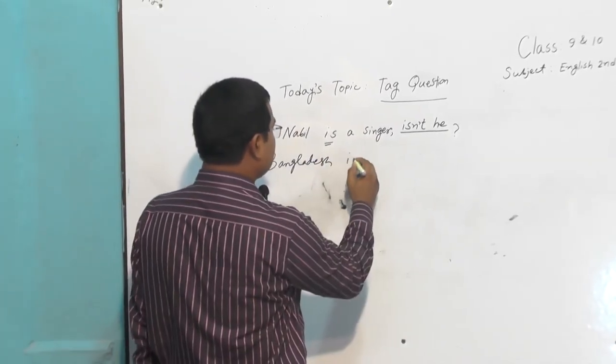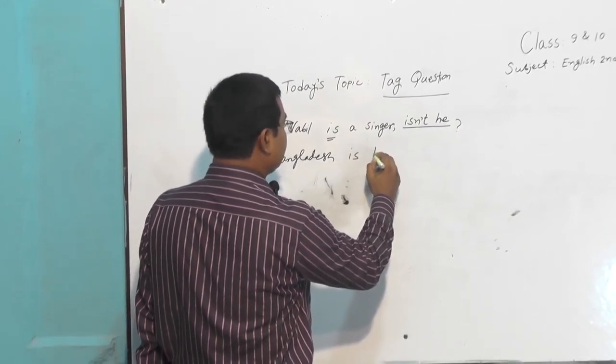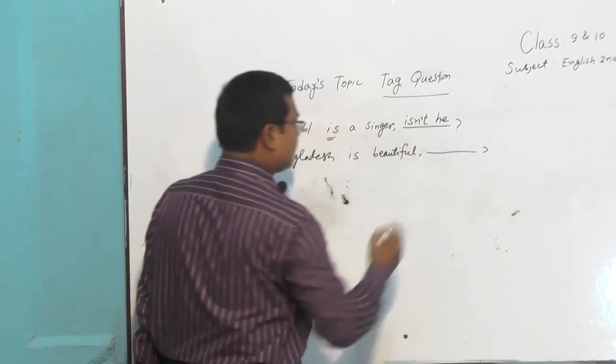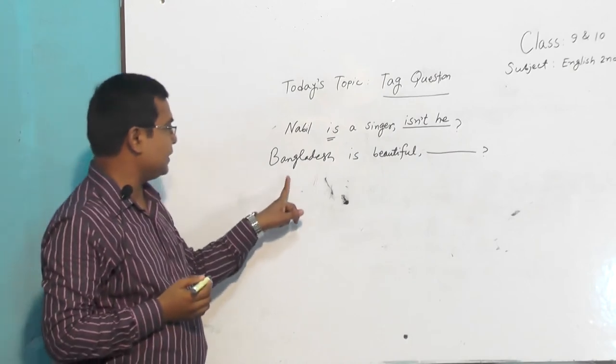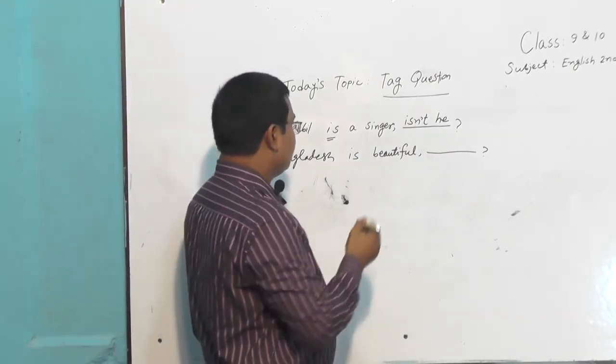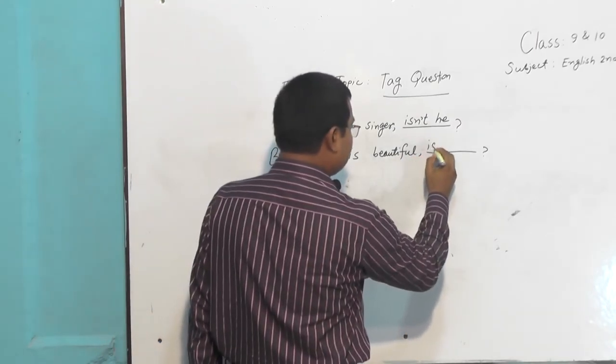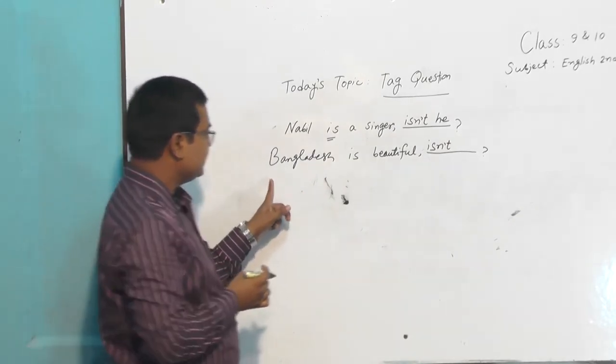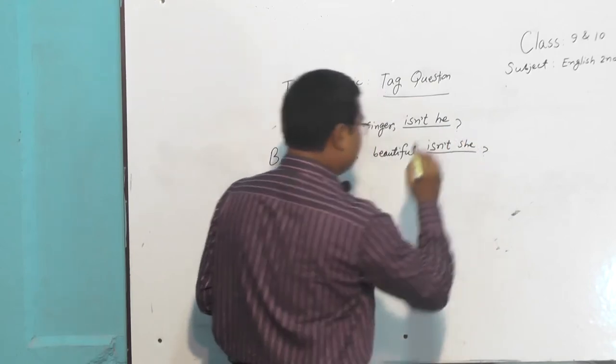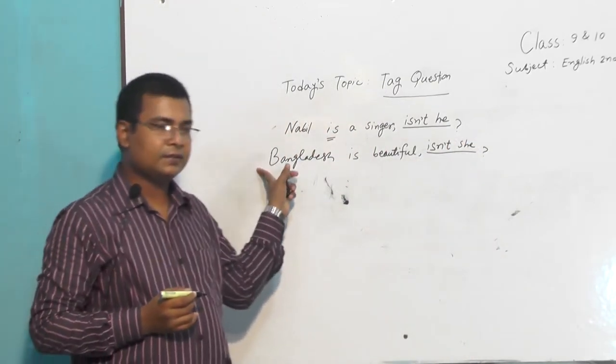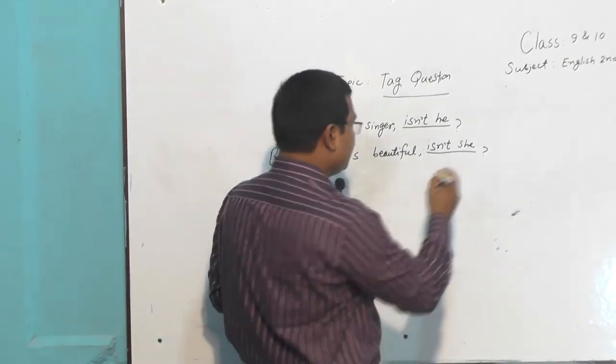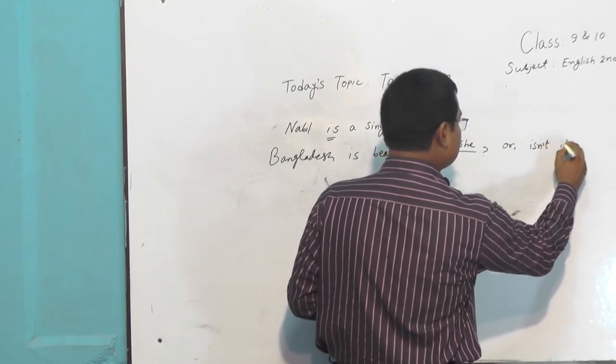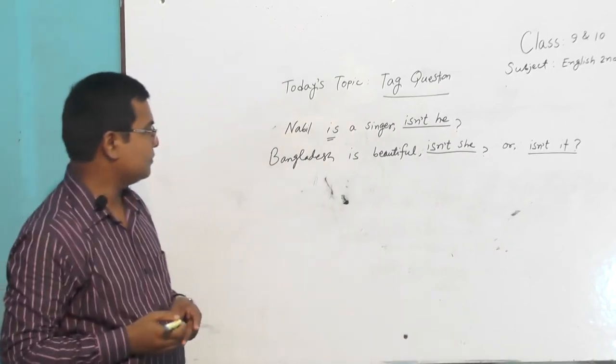Look at another sentence: 'Bangladesh is beautiful'. Here Bangladesh is the name of country, our favorite motherland. We will use here 'is', then 'not' in contracted form, so 'isn't she'. In case of country we will use 'she', or we can use in this way: 'isn't it'.